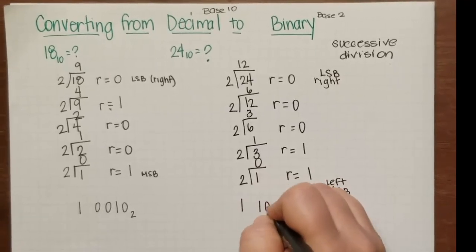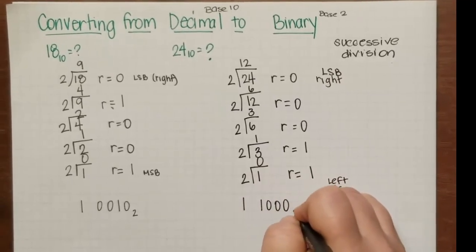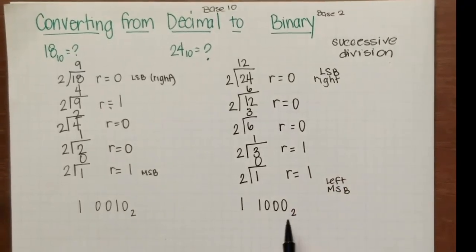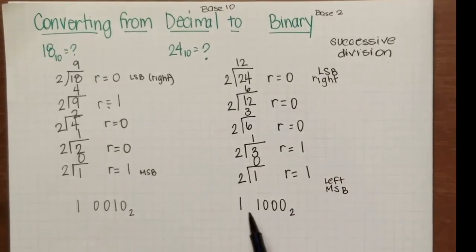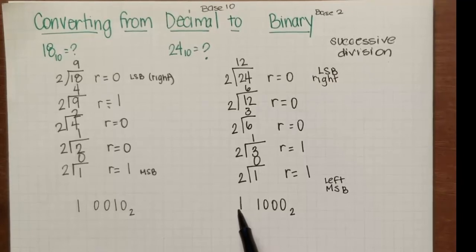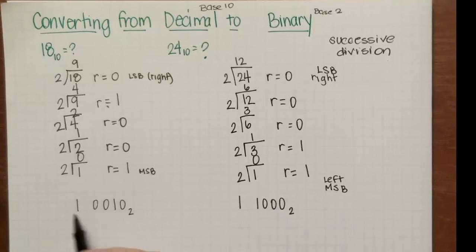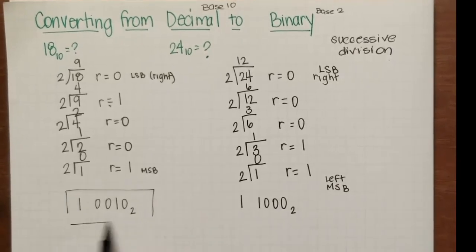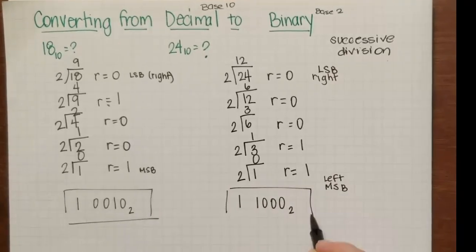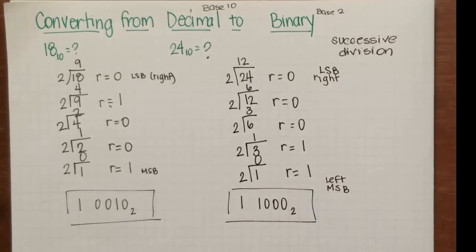And so again, I can check this to see if I got it right. 1, that would be 16, that would be 8. 16 plus 8 is 24. Okay, so these are your final answers. All right, I hope that helps.